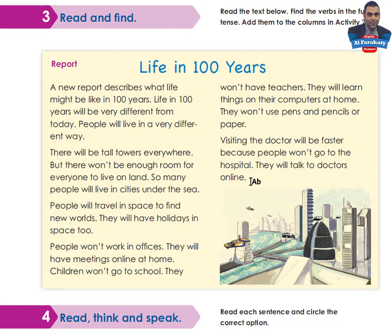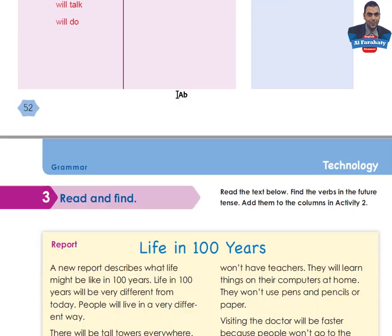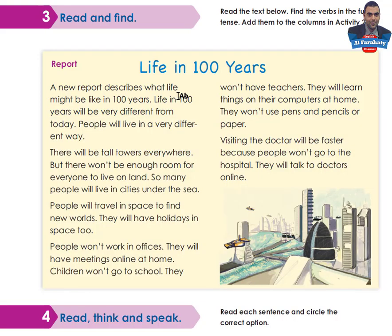You are asked to find the verbs in the future tense — 'will' plus a verb in the infinitive, or 'won't' plus a verb. Here are some of them: will live, will be, will live, will have, will have, won't go, will learn, won't have, won't use, will be, won't go, will talk. Add them to the columns in activity 2. Take your time, then come back to check your answers.